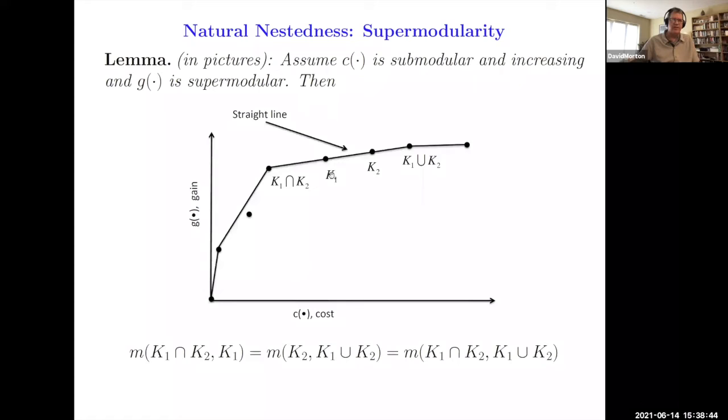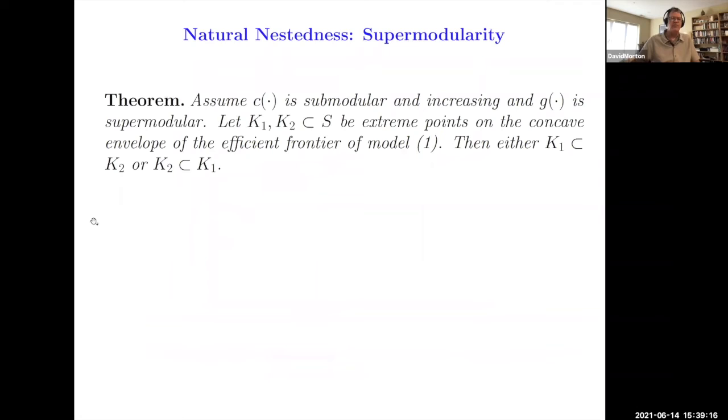So if you believe this lemma, then we got nestedness. It means that obviously the intersection is a subset of the union, and the fact that we have a straight line there means that we have nested kink points on this concave envelope of the Pareto-efficient frontier. Here's a theorem that simply captures the essence of that lemma and says if you've got extreme points on the concave envelope of the efficient frontier, then one is a subset of the other, and hence they're nested.